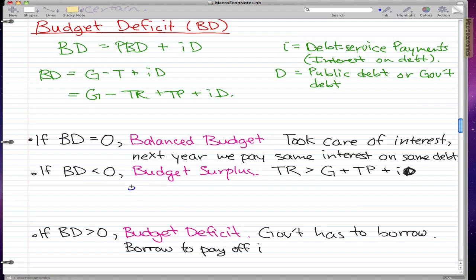For example, let's say our budget deficit is minus 10. In this case, TR is greater than G plus TP plus ID by 10.